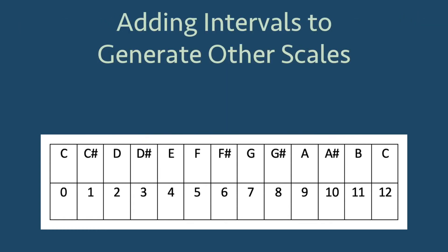While the semitone, fourth, and fifth can generate the 12-tone scale, other intervals will generate different scales.